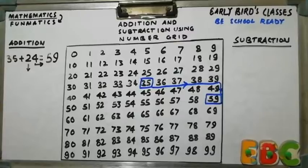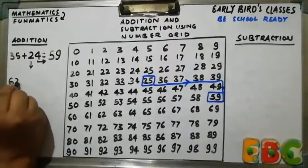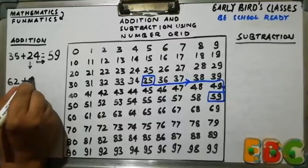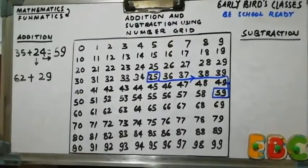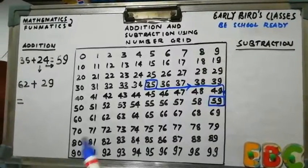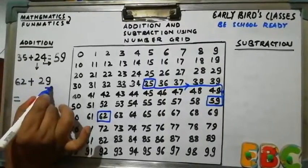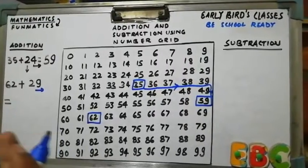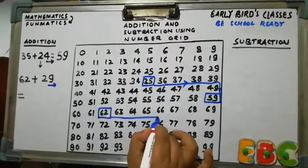Now take another example in which we are going to sum 62 plus 29. So what we will do is first locate 62 on number grid. So here is 62. And for that we have to, second step is we have to move towards right horizontally by 9 places. So 1, 2, 3, 4, 5, 6, 7.